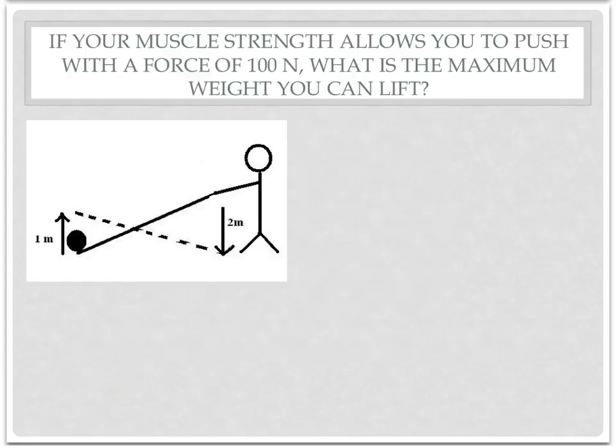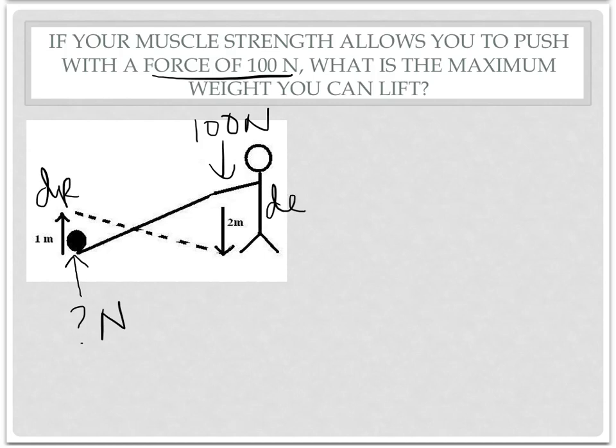So let's apply this to the problem. It says, if your muscle strength allows you to push with a force of 100 Newtons, so you can push down with 100 Newtons, what is the maximum weight you can lift? So our weight is a question. And then the distances are written on there for us. Remember, the distance you move is DE, the distance the lever moves is DR.